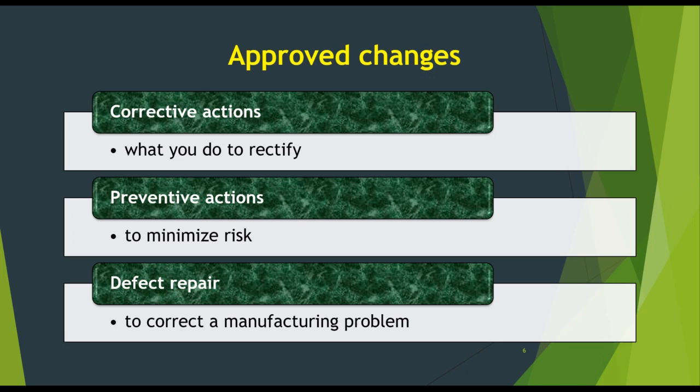Performed approved changes — the first one is corrective action, which means that problems, mistakes, or errors have already happened. During corrective action, after the error occurred, we are going to rectify the given error. Preventive action means to act before the error occurs, like to minimize the risk. And defect repair means to correct any manufacturing or service problems.